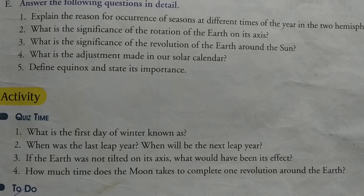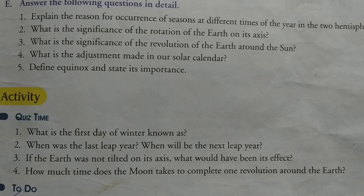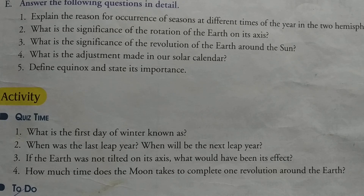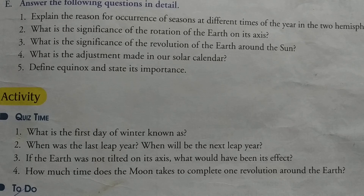Question number five: Define equinox and state its importance. Leave one line and write the answer. An equinox is a day when the sun shines vertically on the equator. Full stop.